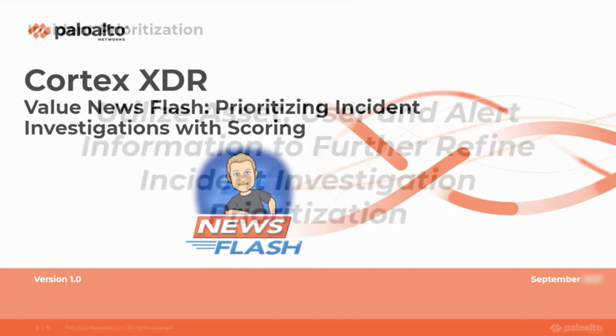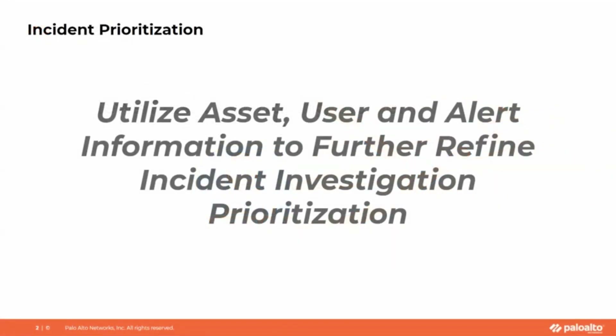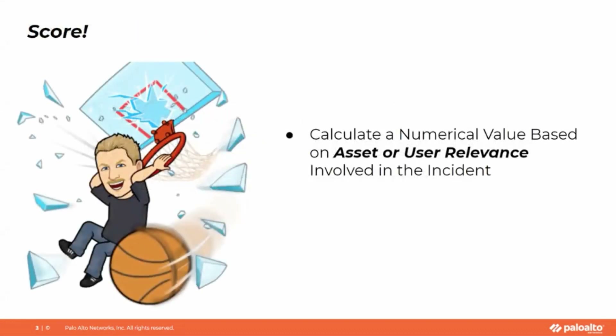When we talk about incident prioritization, we're going to utilize information about our assets, our users, and alert information to further refine the incident investigation prioritization process. Scoring is basically a way of calculating a numerical value based on the asset or user's relevance in the organization. So things like domain controllers or domain administrators, if they are involved in an incident, probably have more prioritization or would want more focus than, say, a back-end print server.